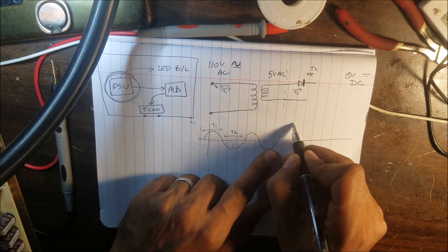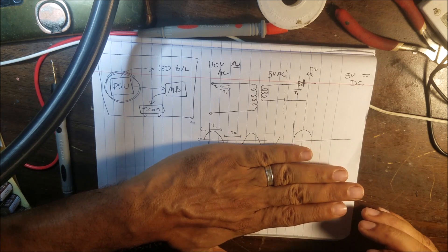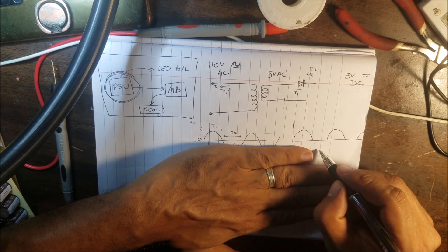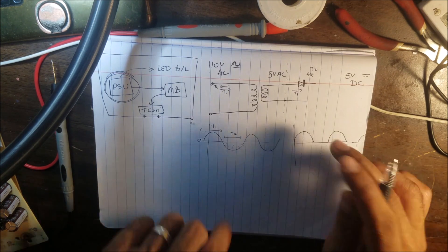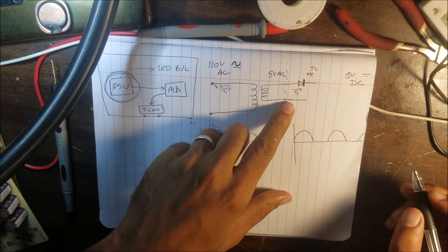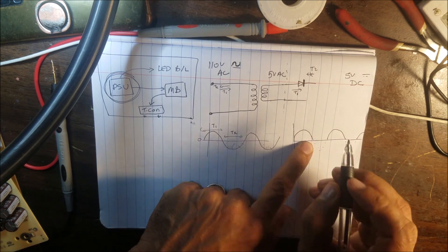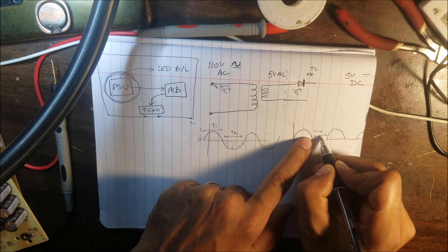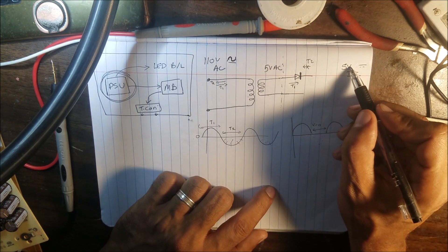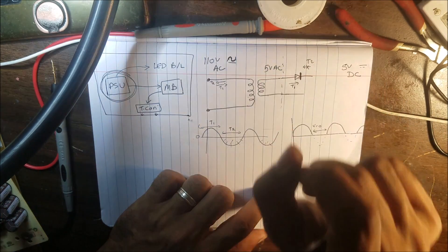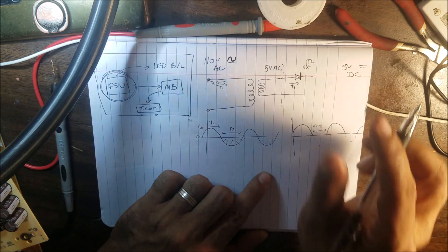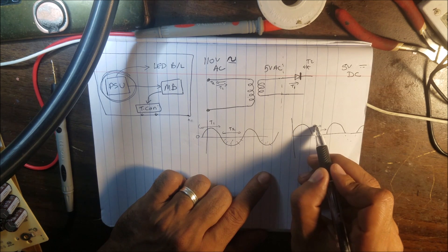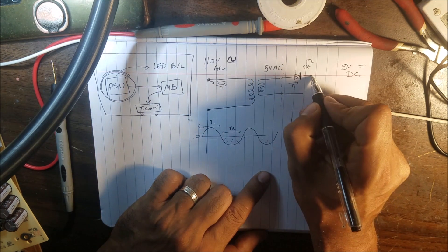So on the output side we're going to have a wave like this - just the positive part of the wave. The other part is gone. This is a very simple linear rectifier. But there is a big gap here during T2 where the voltage equals zero. We're not going to have a clean DC - we're going to have something like flashing. To make this gap smaller, we need something to hold the electricity and keep it going until the next wave. What we need is a capacitor.